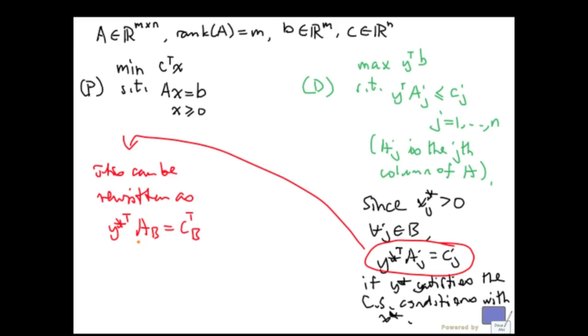Now, A sub b is a square matrix and it's invertible because b is a basis. So that means we can solve for y star transpose. And it's going to be this. And if you take transpose of both sides, we get a unique solution for y star.